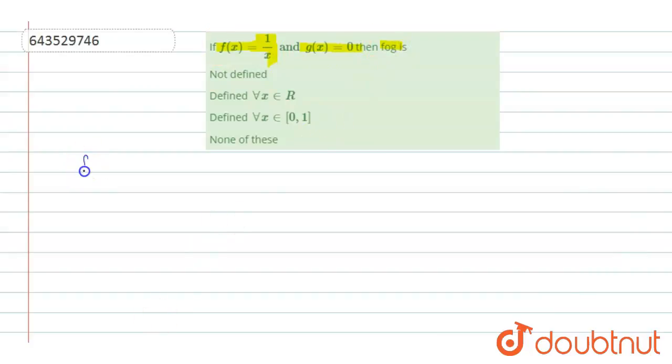Here we have to find f of g(x). So f of g(x) can be written as f of g(x), which can be written as f of 0, since g(x) equals 0 here.